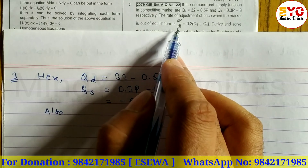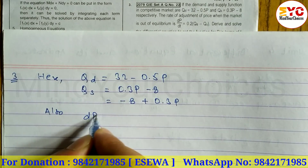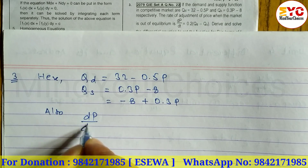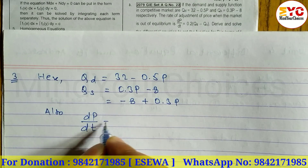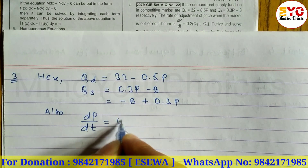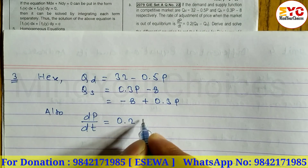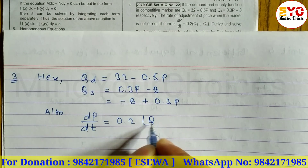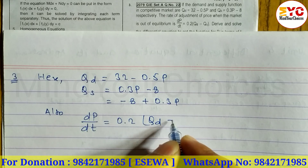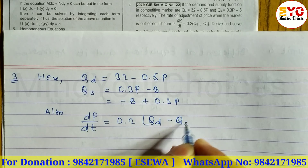From the question, dp/dt = 0.2(qd − qs).